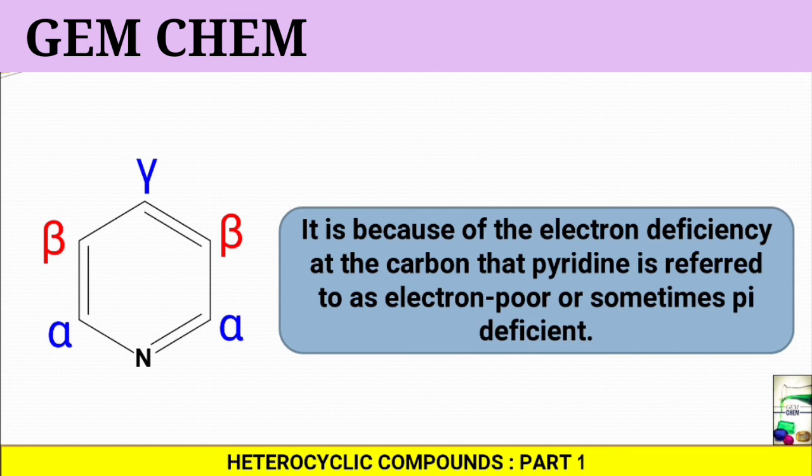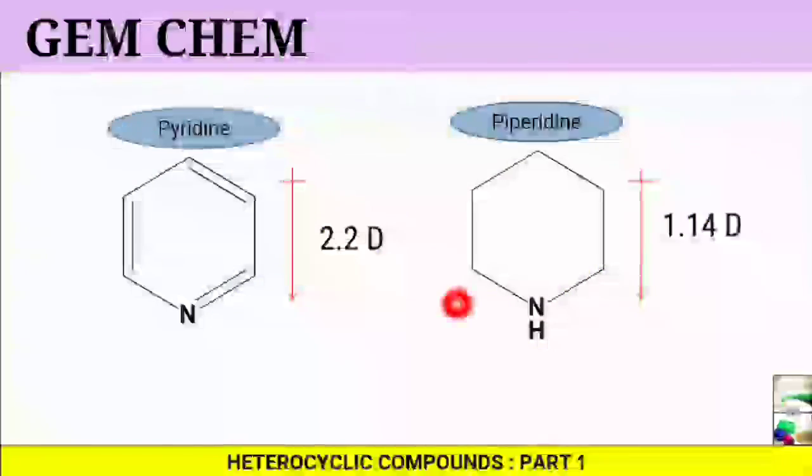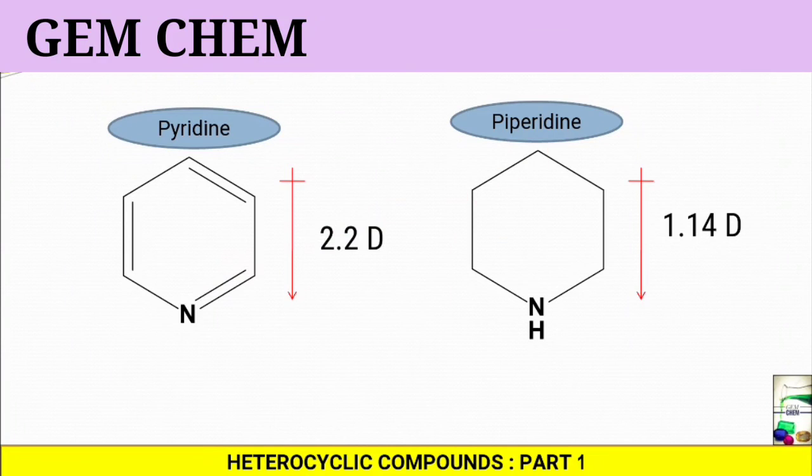If we go to a comparison in order to understand that there is a pi bond framework involved as well as sigma framework involved, we need to consider a comparison with the dipole moment of piperidine. What is piperidine? Piperidine is just same like pyridine without a pi bond.